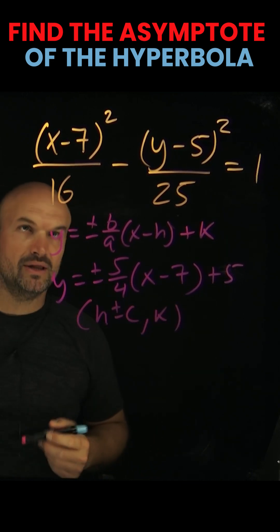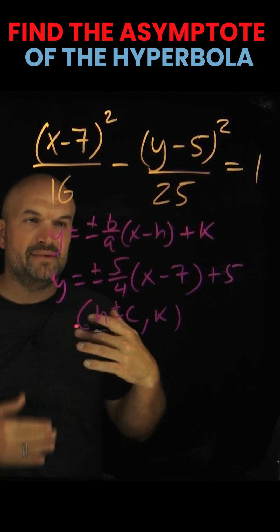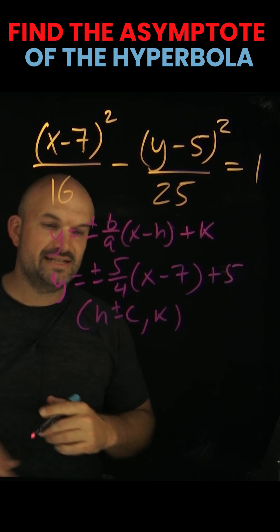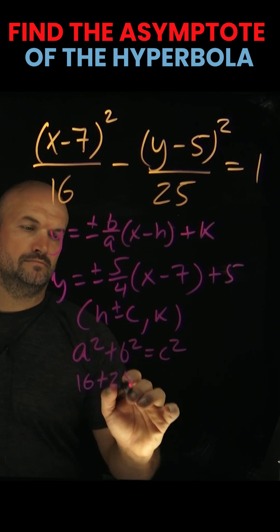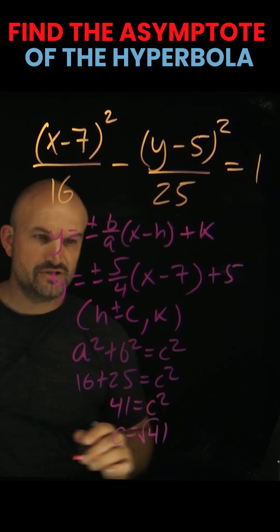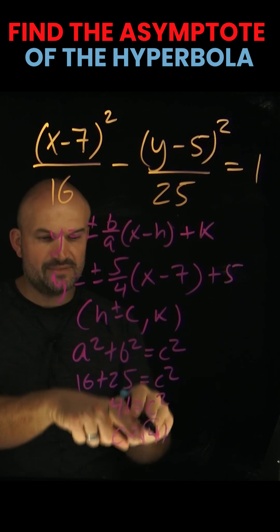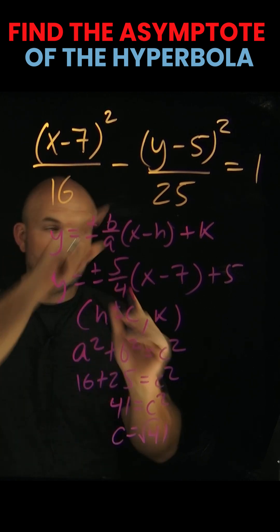Now remember, for a hyperbola, the relationship between a, b, and c is going to be a squared plus b squared equals c squared. So therefore, to find the foci, all I need to do is plug in square root of 41 in for c with my vertex.